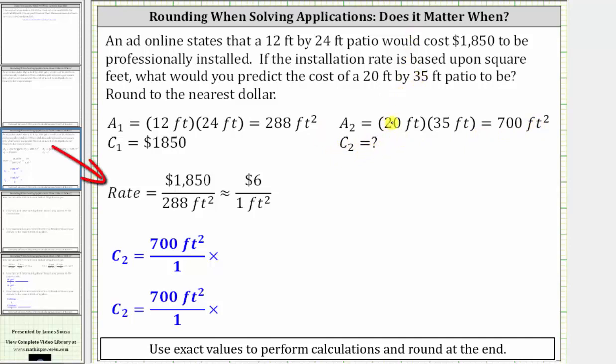And now let's talk about the rate. The given rate is $1,850 per the area of the 12 foot by 24 foot patio, and therefore the rate can be expressed as $1,850 per 288 square feet. And we should use this exact rate to predict the cost of the second patio.